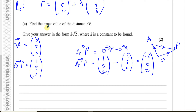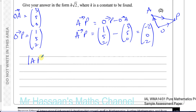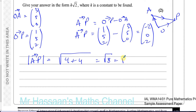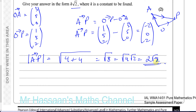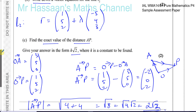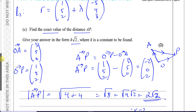To find the exact distance, we find the magnitude of vector AP: we square each component, add them, and take the square root. (−2)² = 4, 0² = 0, 2² = 4. So we get √8, which equals √(4×2) = 2√2. So k = 2, and the exact distance A to P is 2√2.